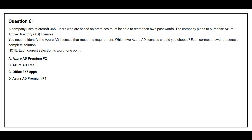Option A: Azure AD Premium P2. Option B: Azure AD Free. Option C: Office 365 Apps. Option D: Azure AD Premium P1. The correct answers are Option A, Azure AD Premium P2, and Option D, Azure AD Premium P1.